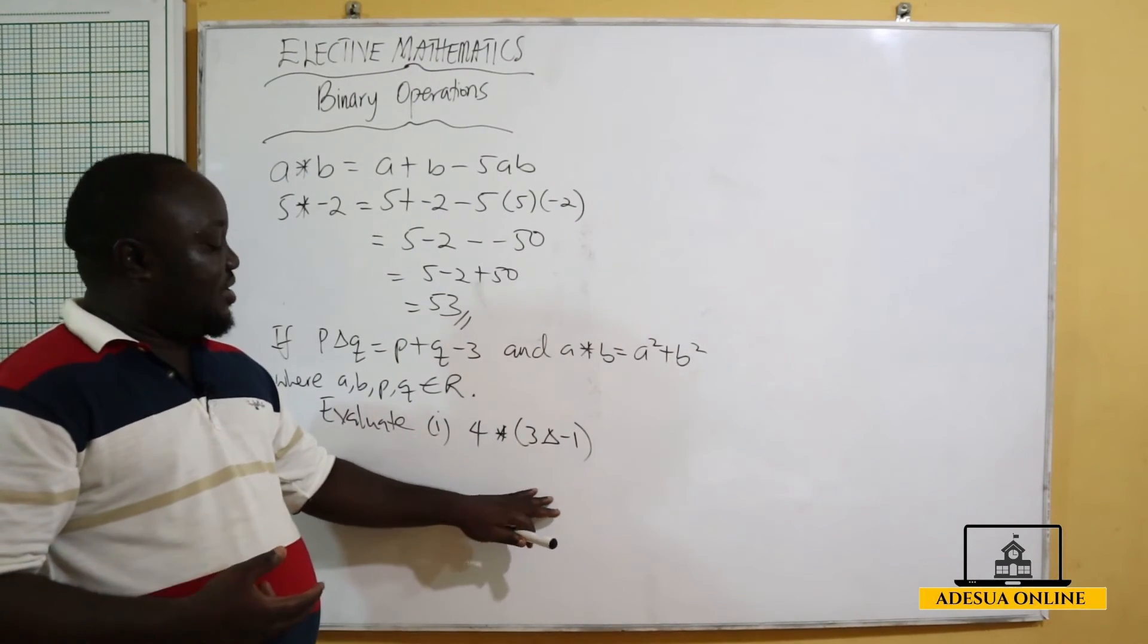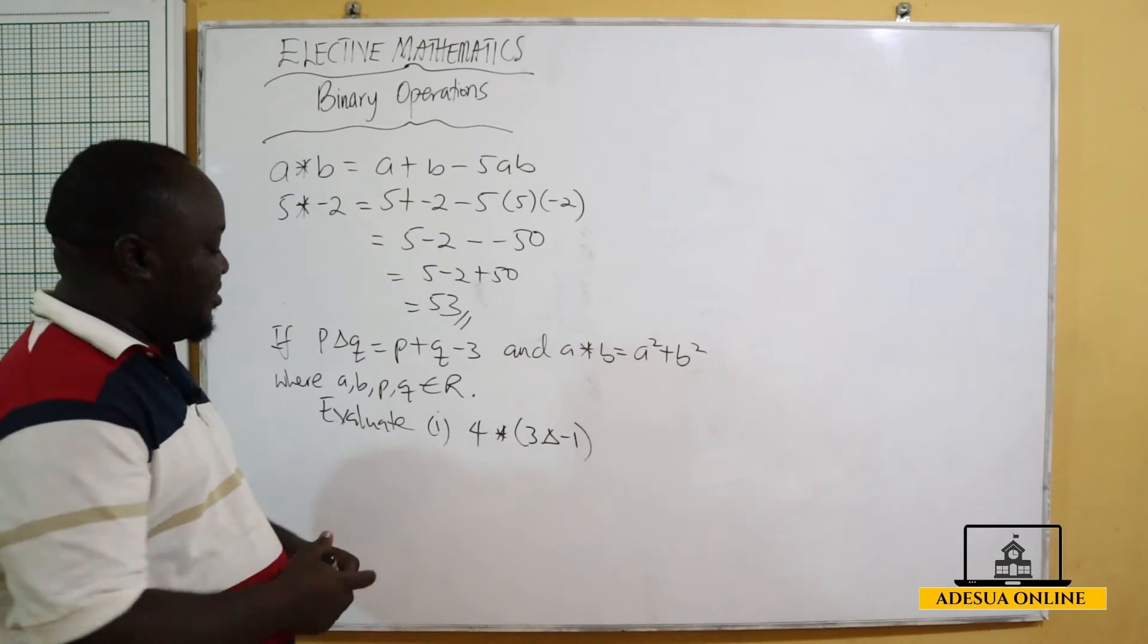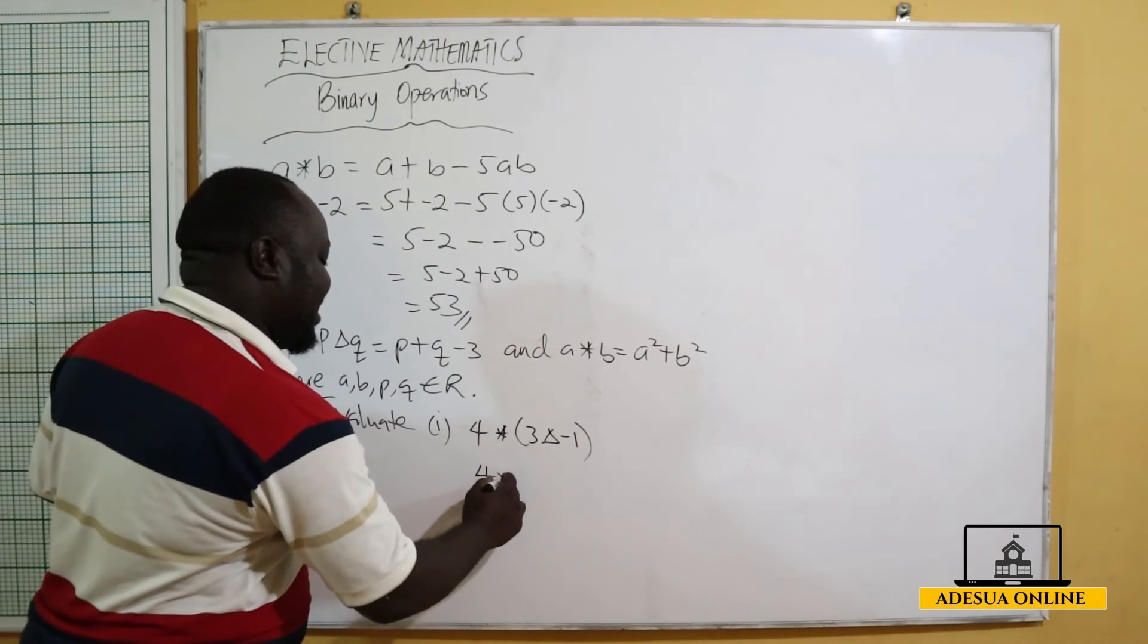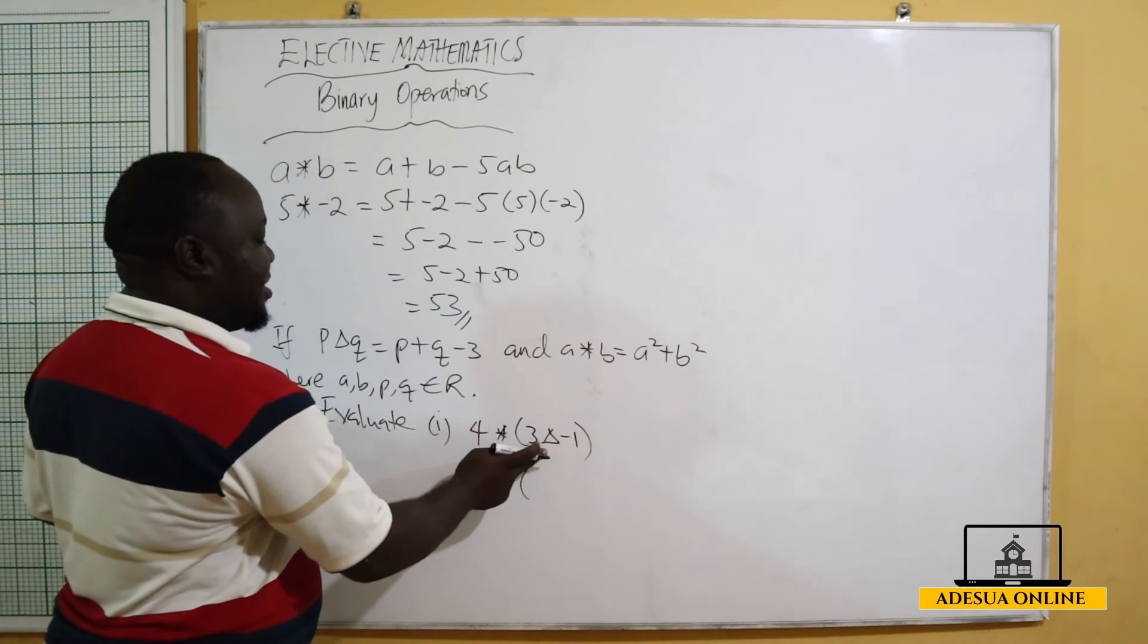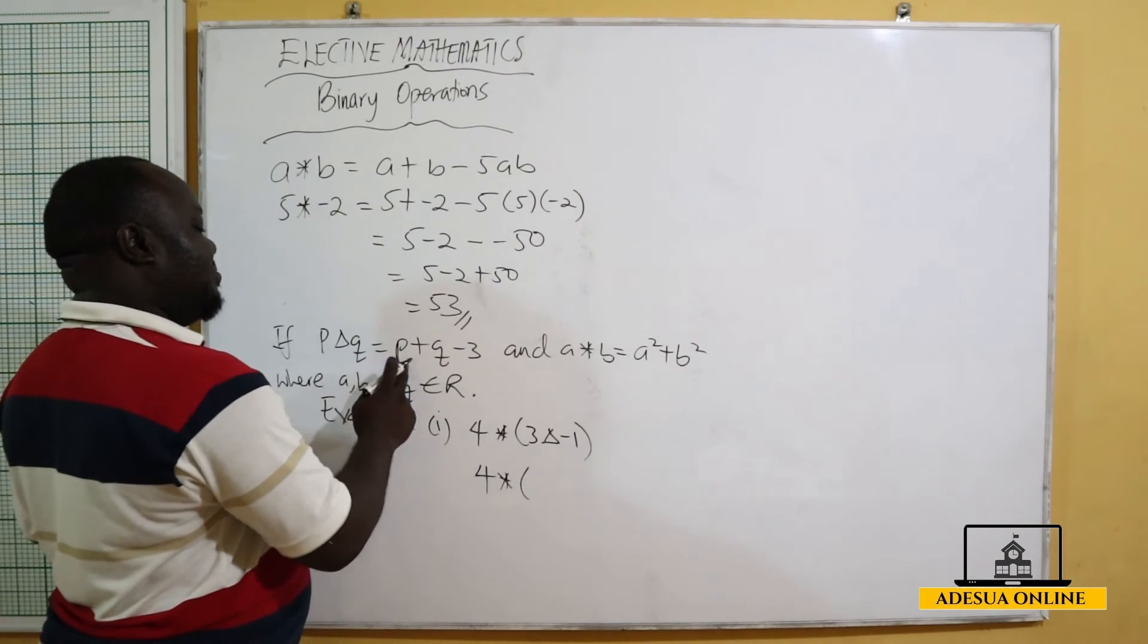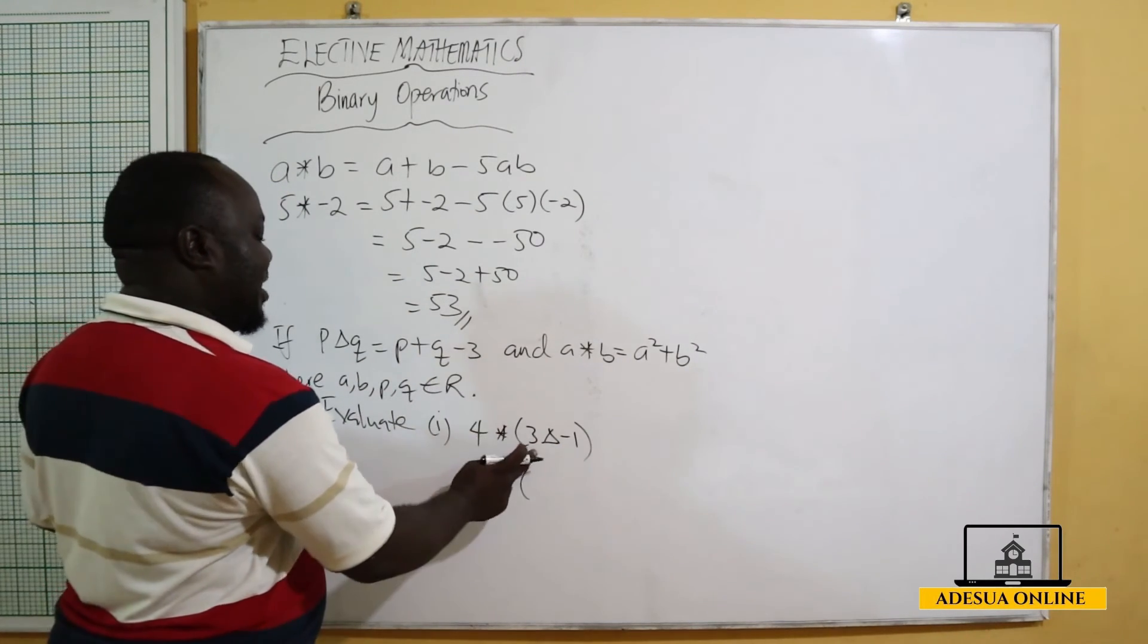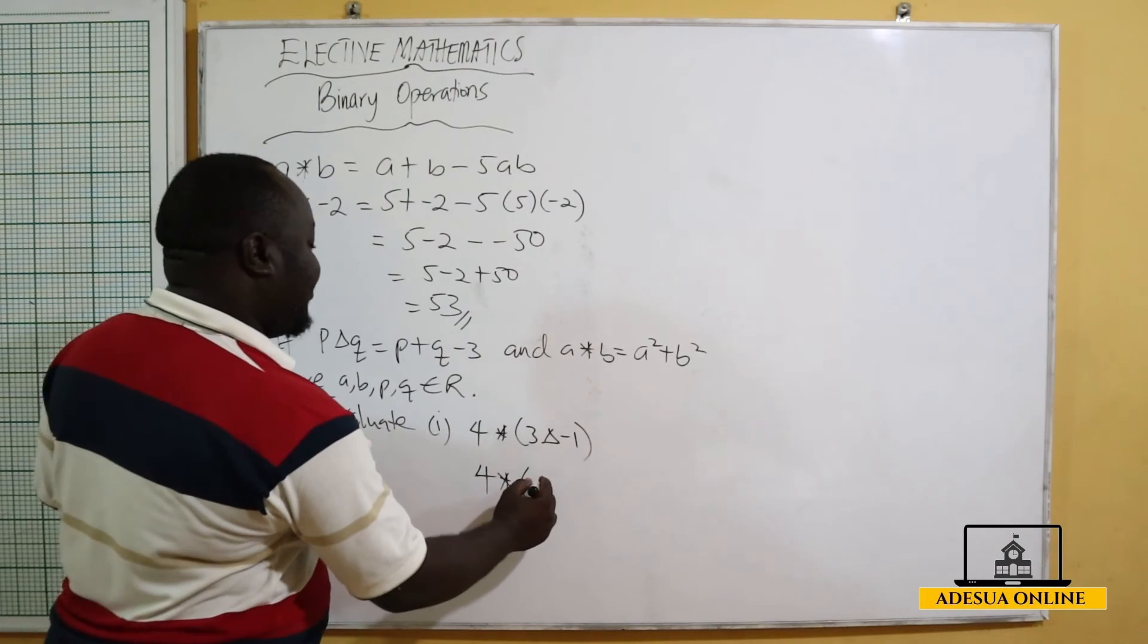So I will have 4 star, now 3 operation negative 1. This time we are going to use triangle, and the triangle says p plus q minus 3. So if this is my p, this is my q, I'll have p which is 3 plus q which is negative 1 minus 3.